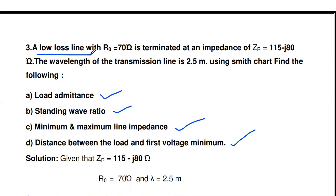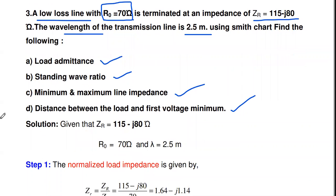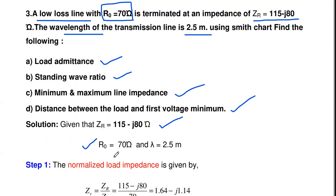The question: a lossless transmission line with characteristics resistance R0 equal to 70 ohms is terminated at an impedance ZR equal to 115 minus j80 ohms. The wavelength of the transmission line is 2.5 meters. Using the Smith chart, find: load admittance, standing wave ratio, minimum and maximum line impedance, and distance between the load and first voltage minimum. Given data: ZR = 115 − j80 Ω, R0 = 70 Ω, λ = 2.5 m.